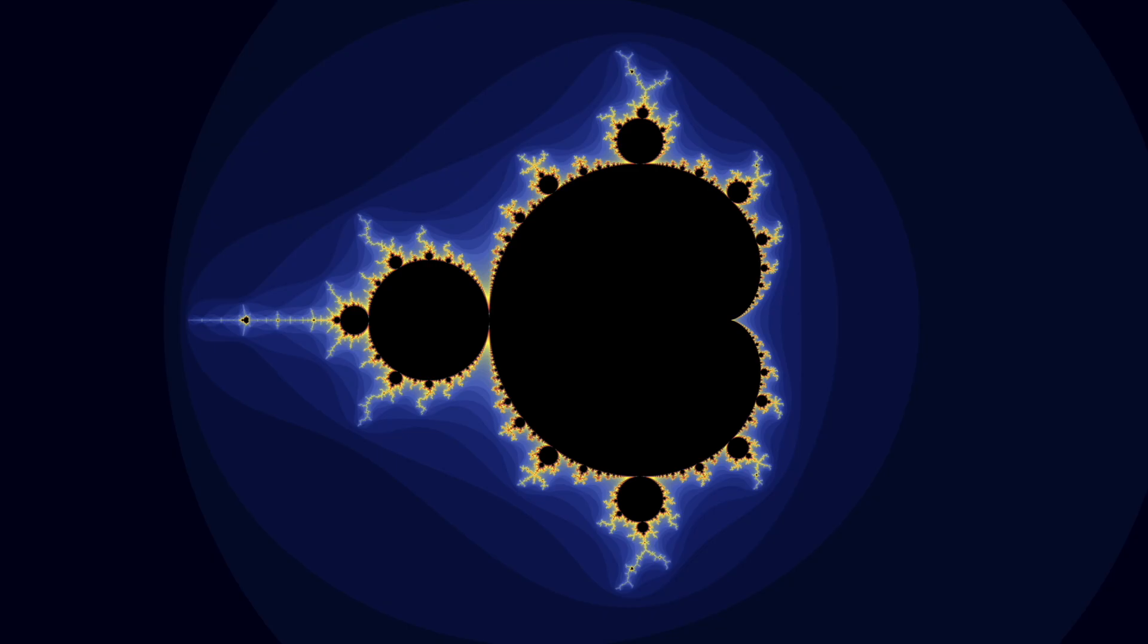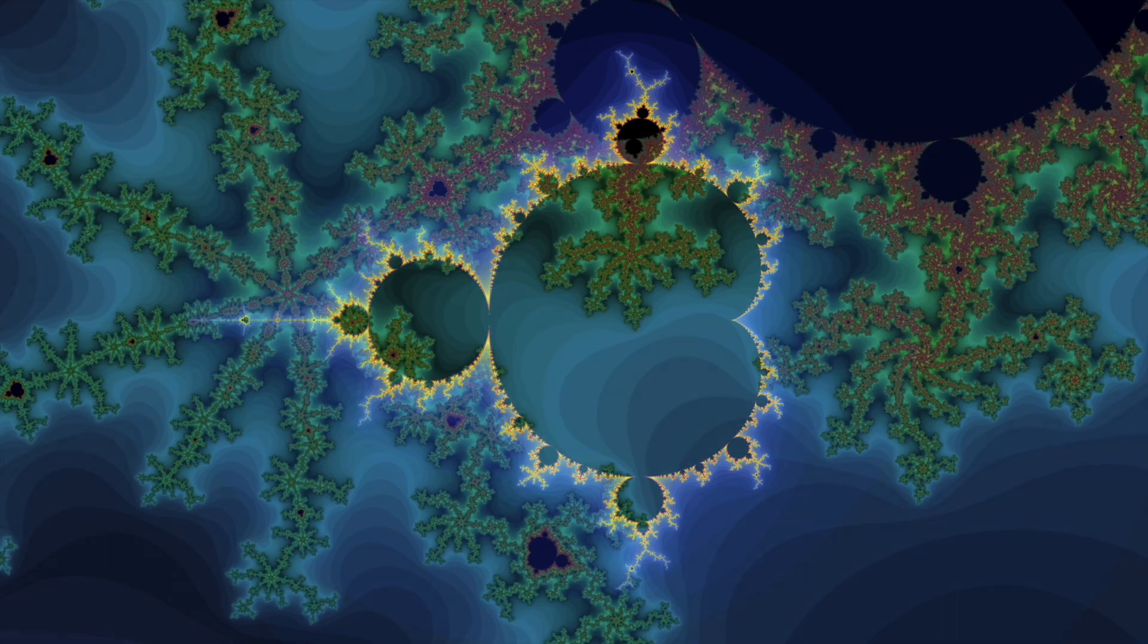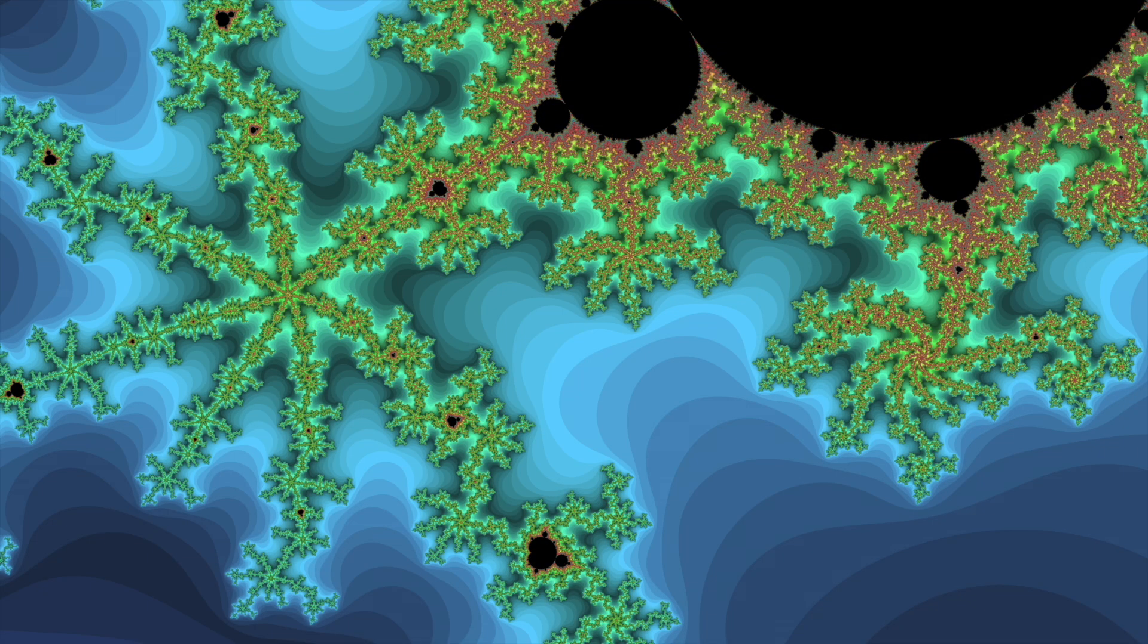Visualizing the Mandelbrot set gives us this complex and iconic image where the black portions are inside the set. The colors correspond to how quickly a particular number outside the set diverges. This is true for the set as a whole as well as its intricate details.